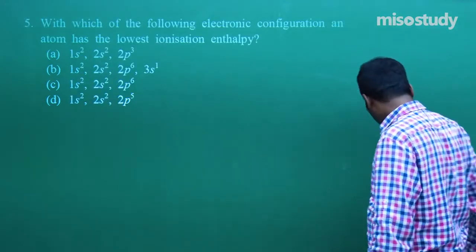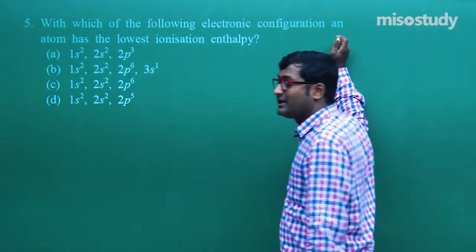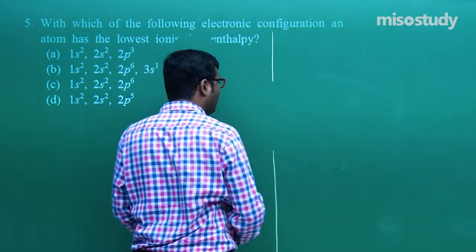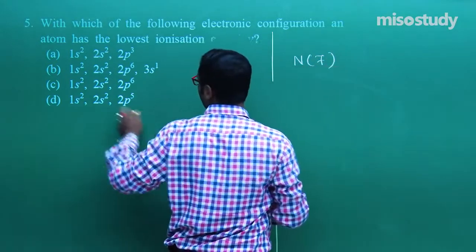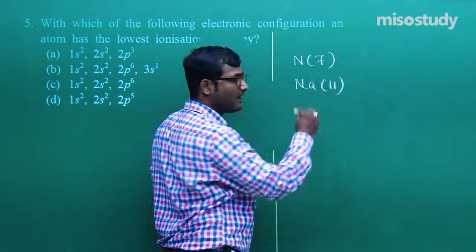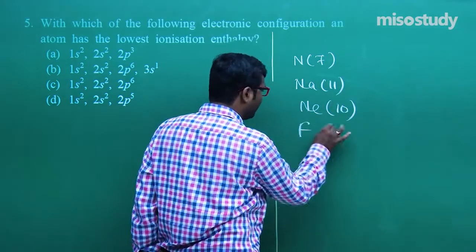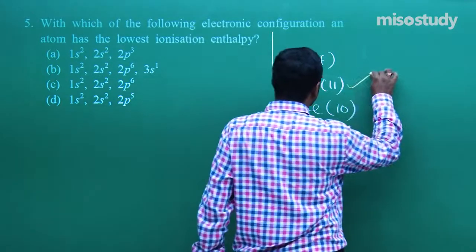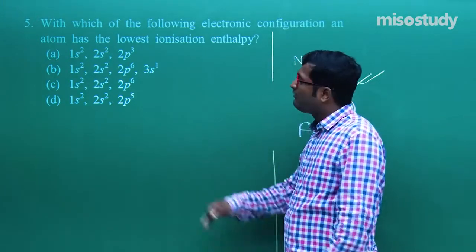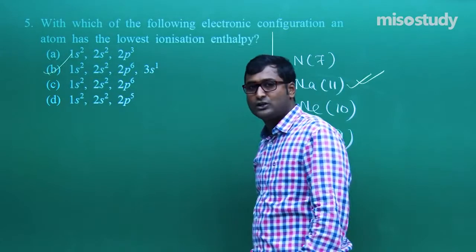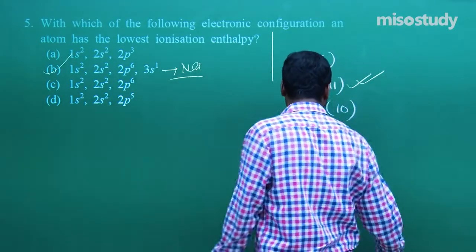Question number five: which electronic configuration gives an atom the lowest ionization energy? The options are: 1s² 2s² 2p³ (nitrogen), 1s² 2s² 2p⁶ 3s¹ (sodium), 1s² 2s² 2p⁶ (neon), and 1s² 2s² 2p⁵ (fluorine). The metal among these is sodium, and metals have low ionization energy. For question number five, B is the correct option — 1s² 2s² 2p⁶ 3s¹, which is sodium.